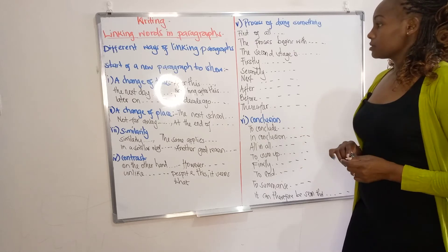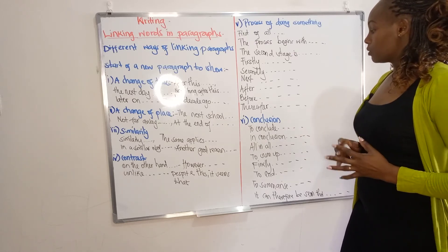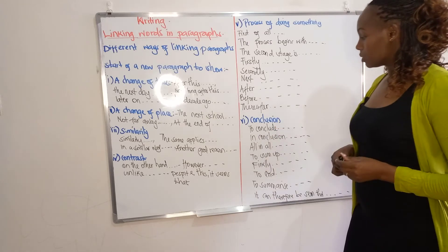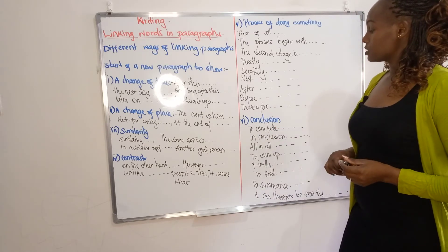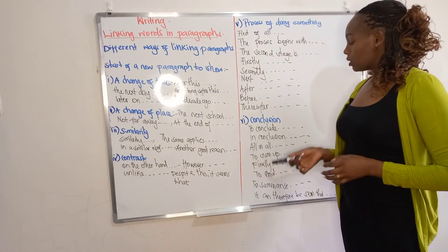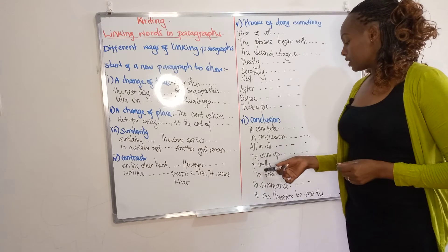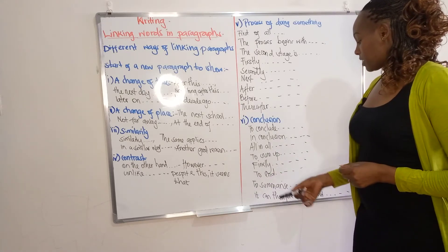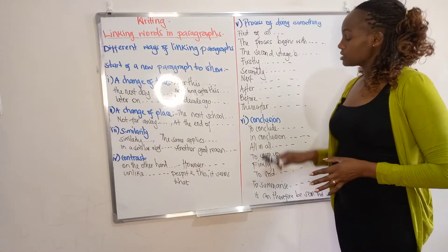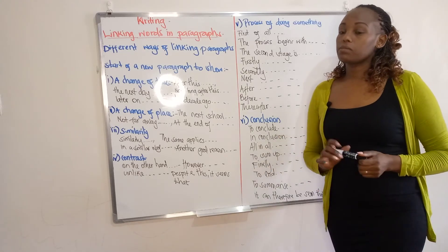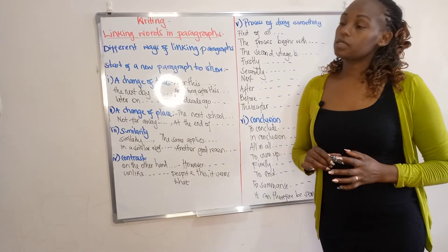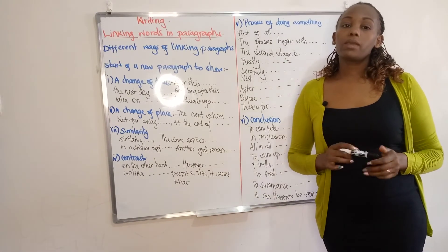When you are concluding your paragraph, your final conclusion, you may write 'to conclude' or 'in conclusion' at the start of the conclusion paragraph. Other options include 'all in all,' 'to sum up,' 'finally,' 'to end,' 'to summarize,' or 'it can therefore be seen that.' These are just a few words that may be used to show a conclusion in your concluding paragraph.